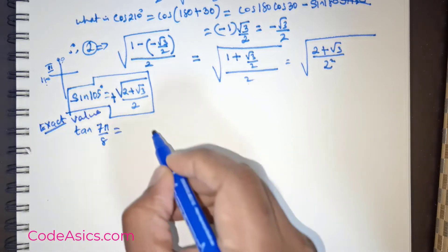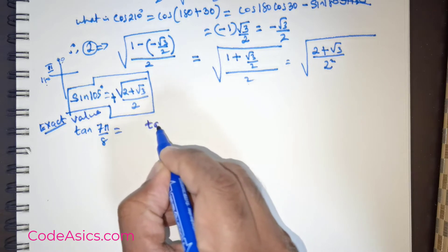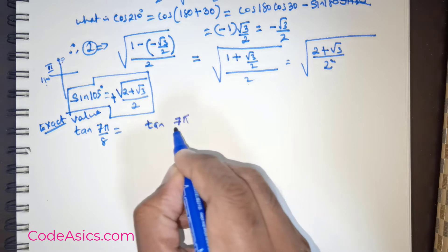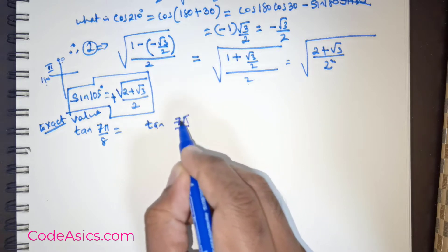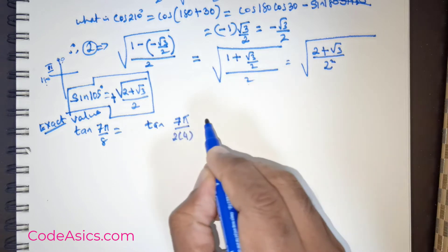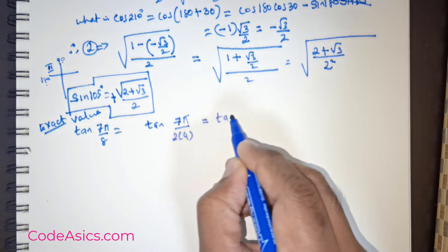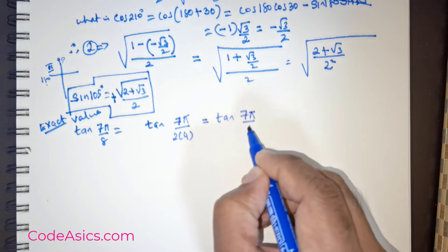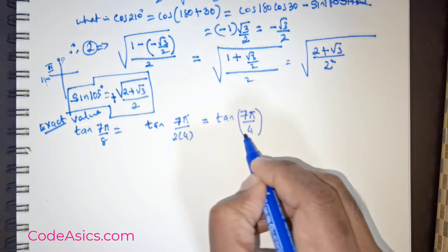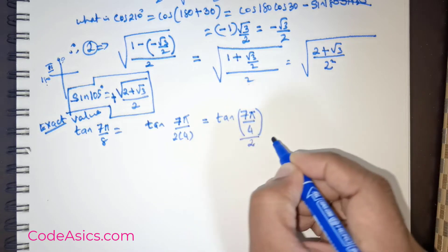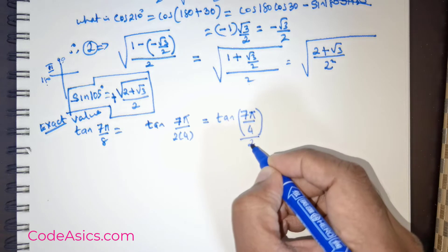Now foremost, what I wish to do is rewrite tan 7π/8 as tan 7π over 2 times 4. So this is rewritten further as tan 7π/4 divided by 2, right?